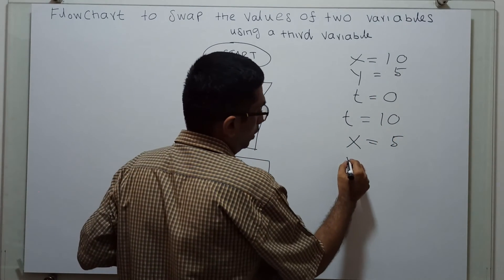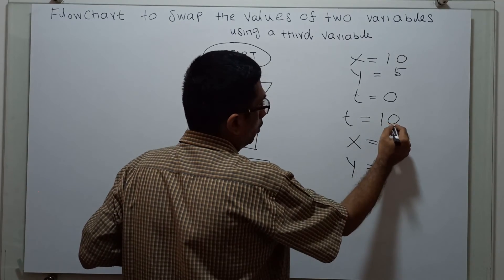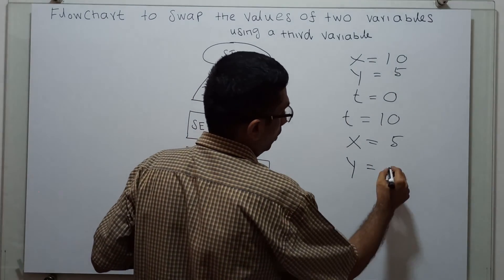Then, y equal to t. So, what is the value of t? t equal to 10. That means, x old value. y equal to 10.